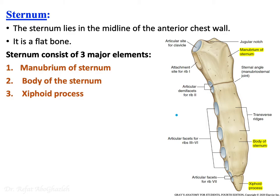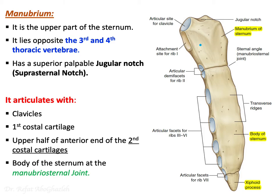The thoracic cage consists anteriorly of the sternum. The sternum is felt in the midline of your chest and is described as a flat bone. It is not one piece — it is composed of three parts: the manubrium (the most superior), the body of the sternum, and the xiphoid process.